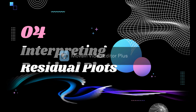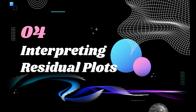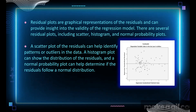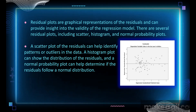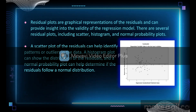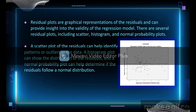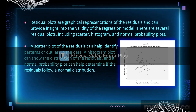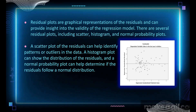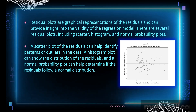Interpretation of residual plots — residual plots are graphical representations of residuals and can provide insights into the validity of a regression model. There are several residual plots including scatter plots, histograms, and normal probability plots. A scatter plot of residuals can help identify patterns or outliers in the data. A histogram can show the distribution of the residuals, and the normal probability plot can help determine if the residuals follow a normal distribution.